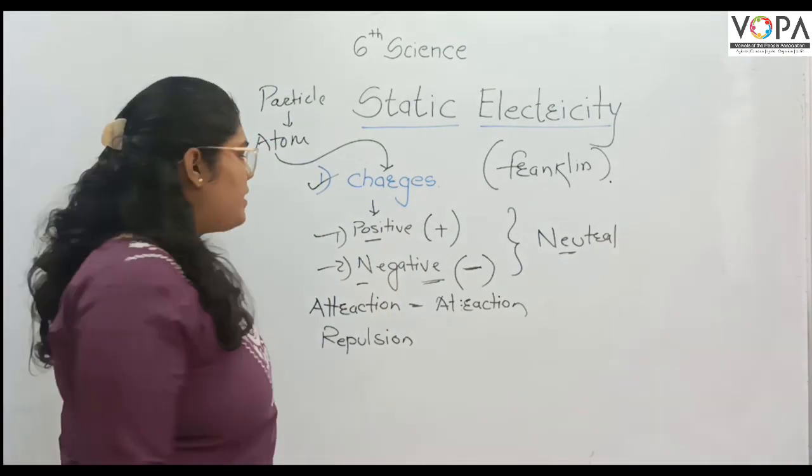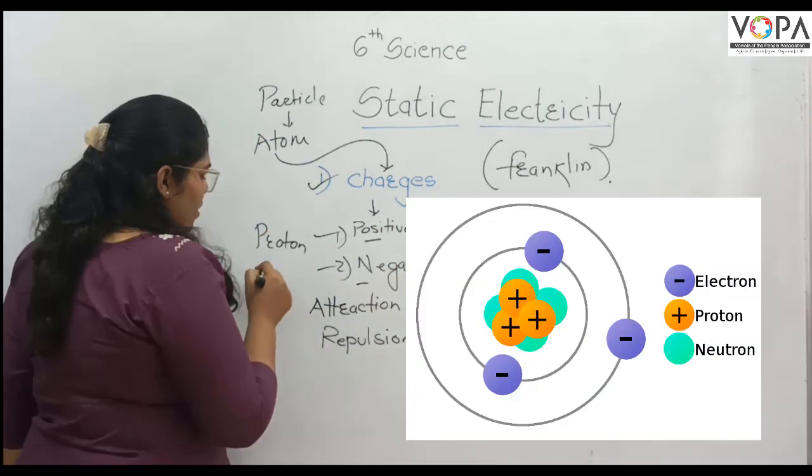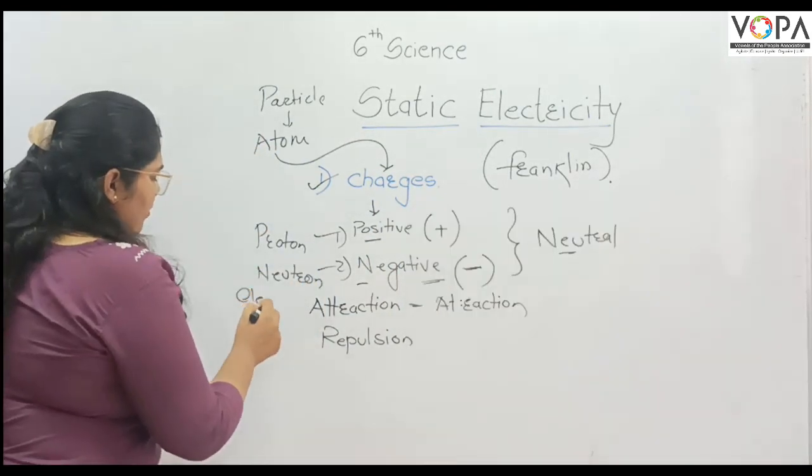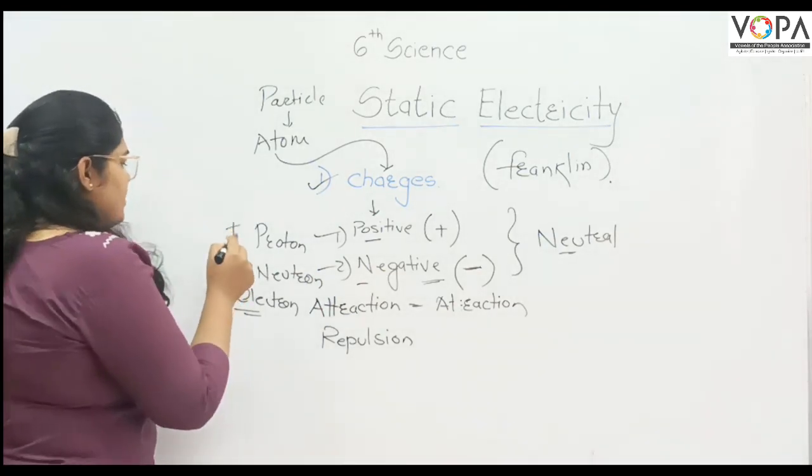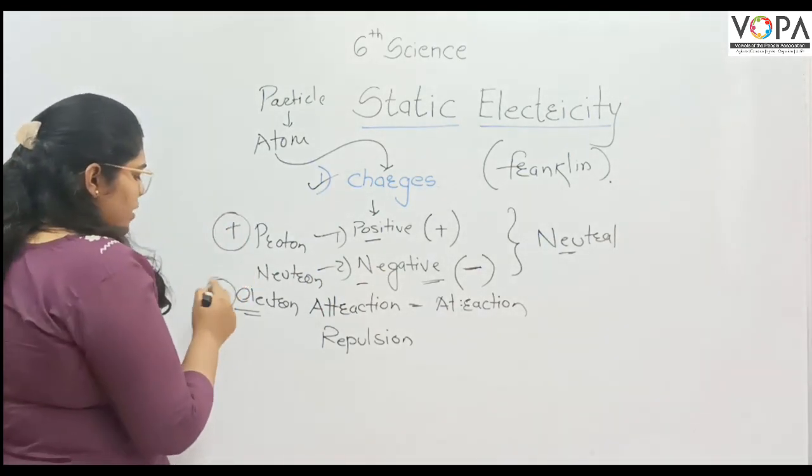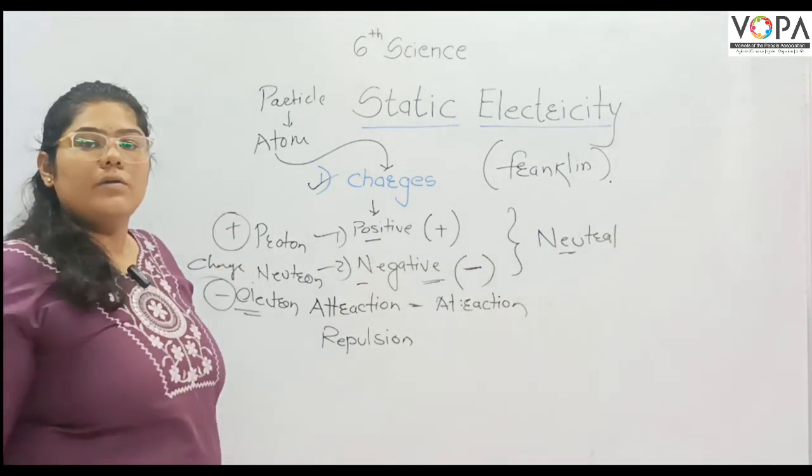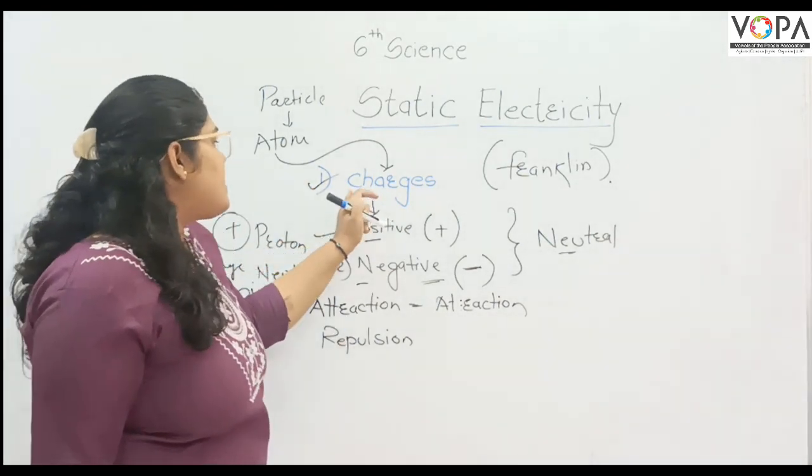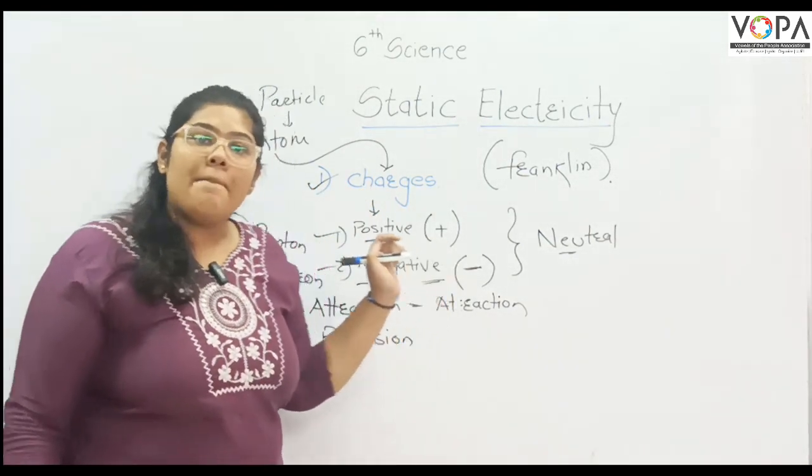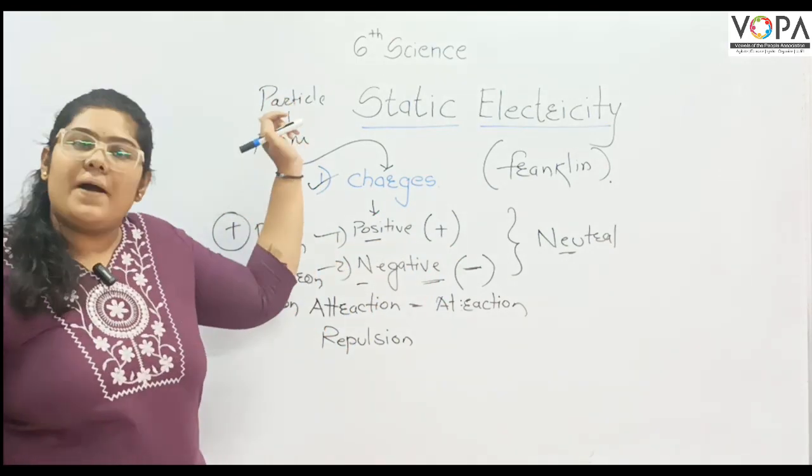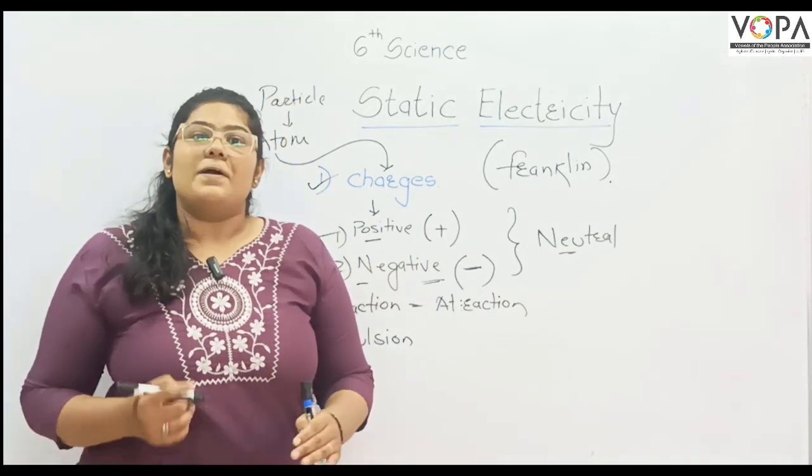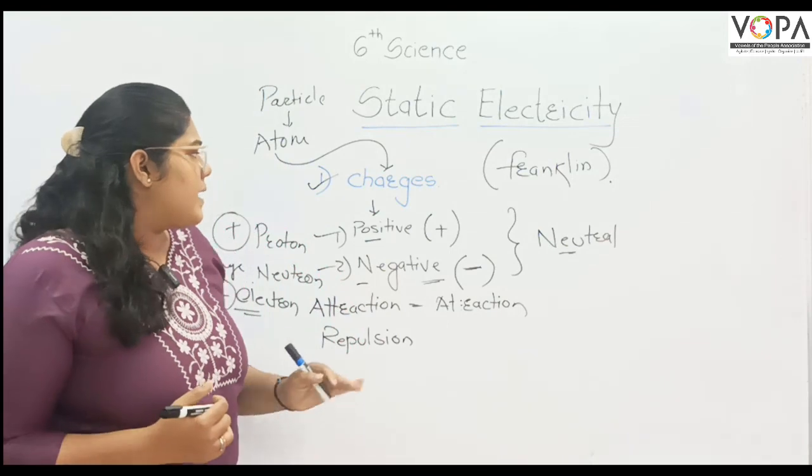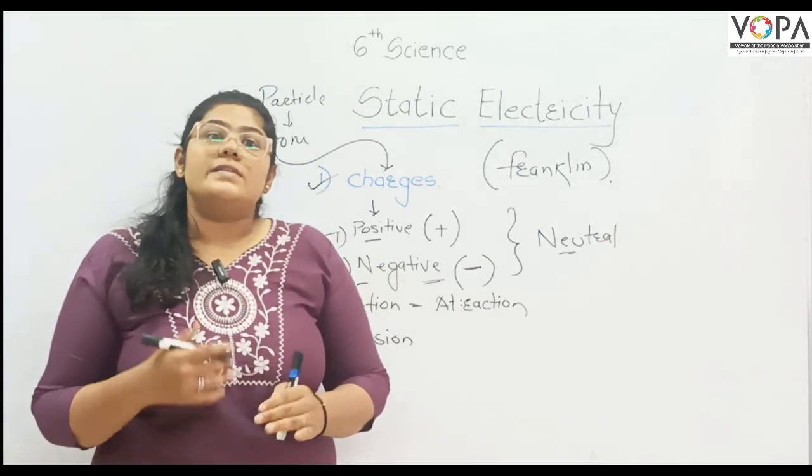Every particle and atom has various charges: proton, neutron, and electron. Proton has positive charge, neutron has no charge, and electron has negative charge. Each atom and each particle has these charges. This chapter tells us about charges and how the discovery of charges happened by Benjamin Franklin.